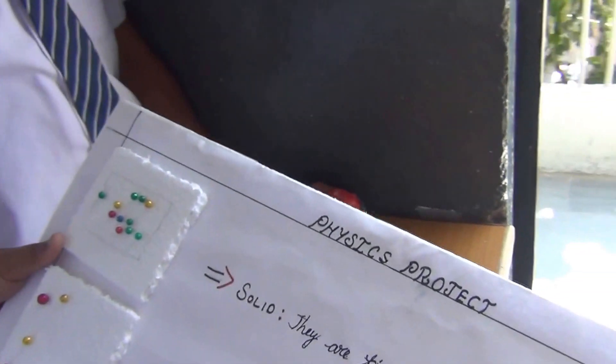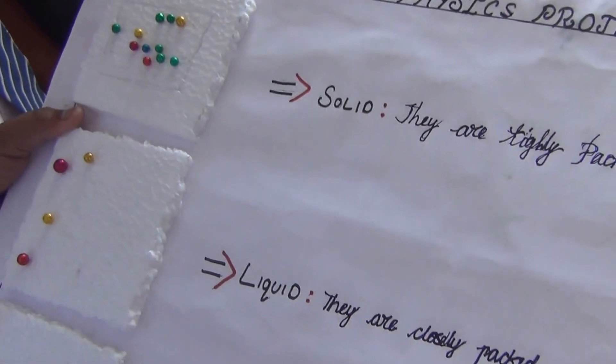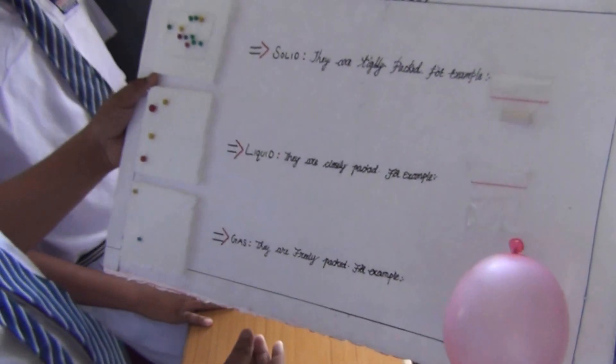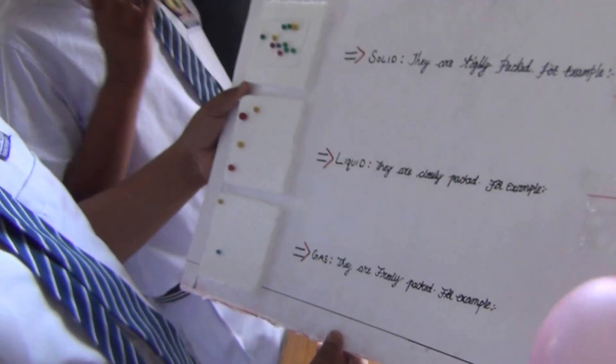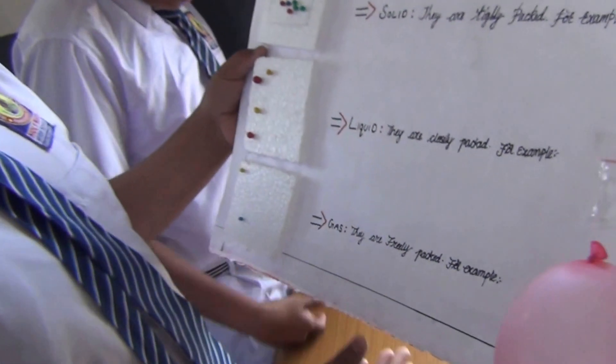The particles in the solids are tightly packed, and in the liquid the particles are loosely packed, and in the gas the molecules move freely. I am also going to tell you about how diffusion takes place in matter. Diffusion only takes place when the particles move continuously and the diffusion is higher in the gas compared to the solids and liquids. For example, camphor which is kept in woolen clothes will save from the moths insects.